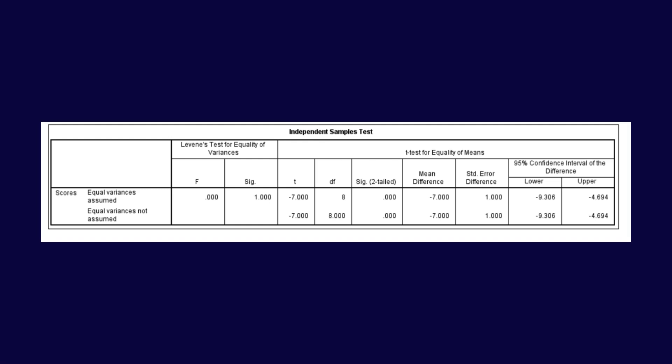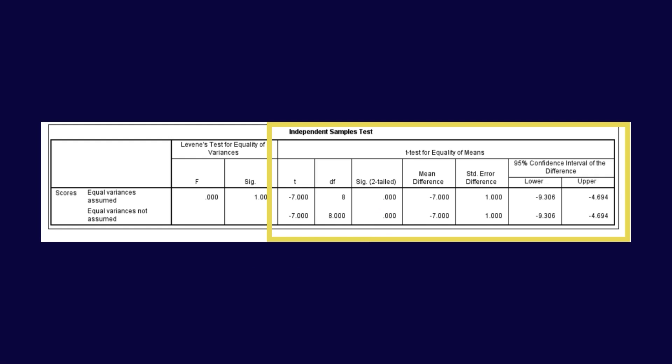Let's interpret the t-test results. Since the p-value is less than 0.05, we reject the null hypothesis and conclude that there is a statistically significant difference between the mean of group 1 and group 2. The mean difference of minus 7 indicates that one group's mean is 7 points lower than the other group's mean.